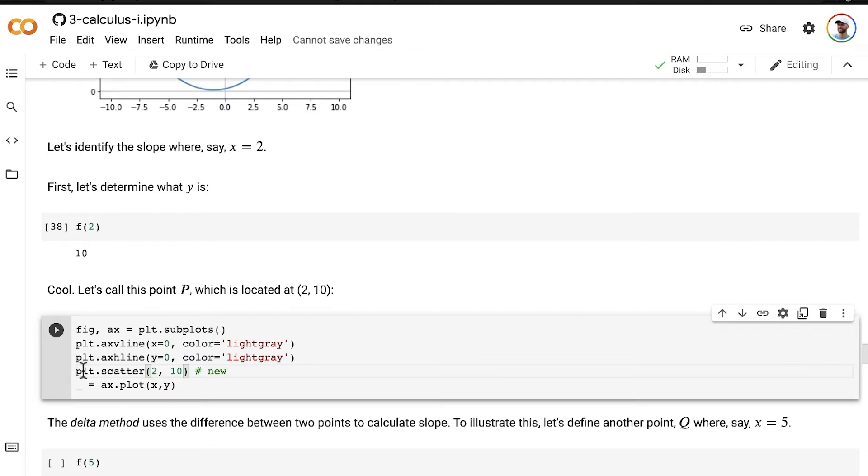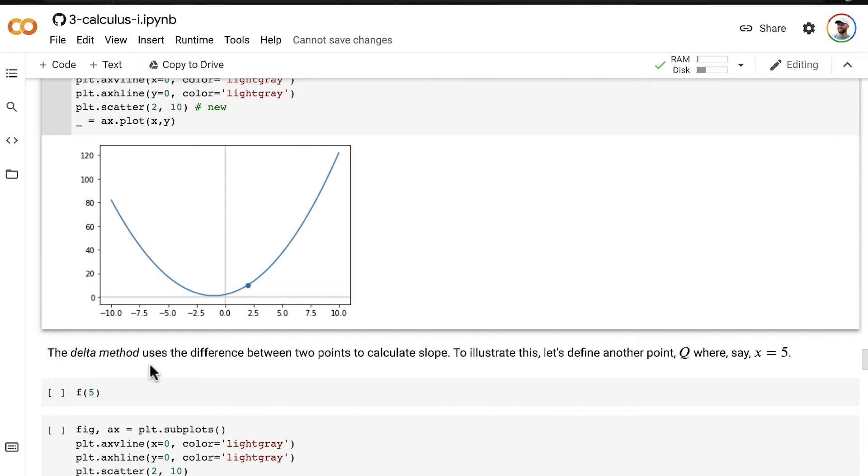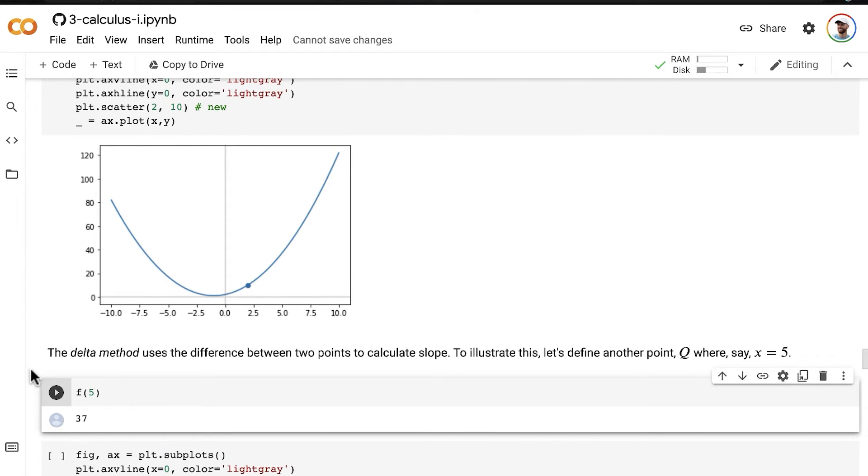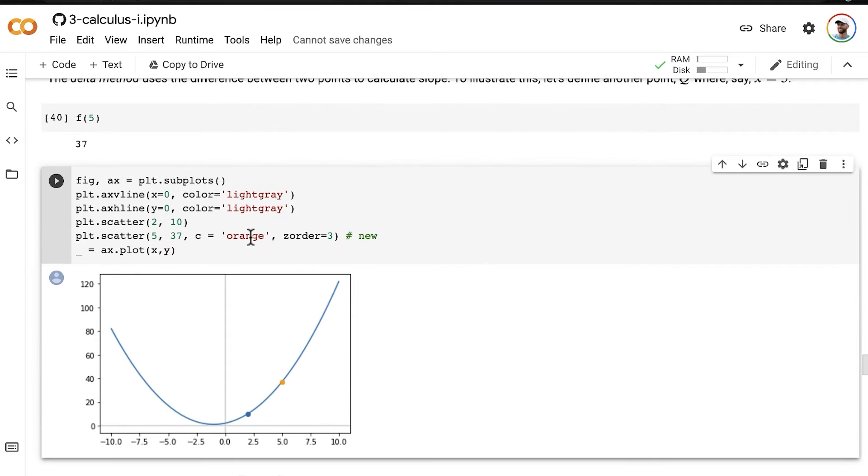We can now use the scatter method in matplotlib to plot out that exact point at x equals 2 and y is equal to 10. The delta method that we're covering now uses the difference between two points to calculate the slope at our point of interest. So to illustrate this, we define another point, let's say Q, relatively nearby our first point P. Our first point P is at where x is equal to 2, and x is equal to 5 is not too far away. So let's put our point Q there. At that point, what is y equal to? Where x is equal to 5, y is equal to 37. Now we can plot out that point as well. We'll plot it out in orange. Where x is equal to 5, y is equal to 37.